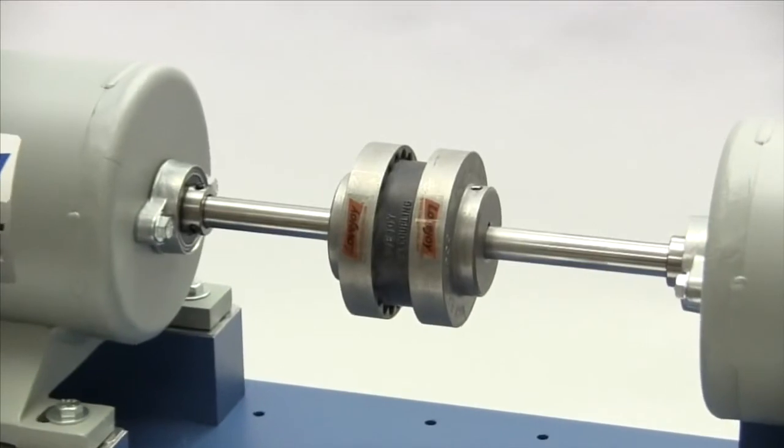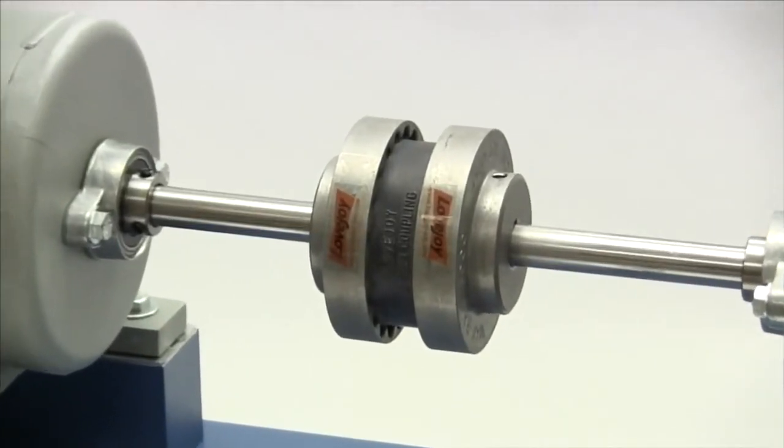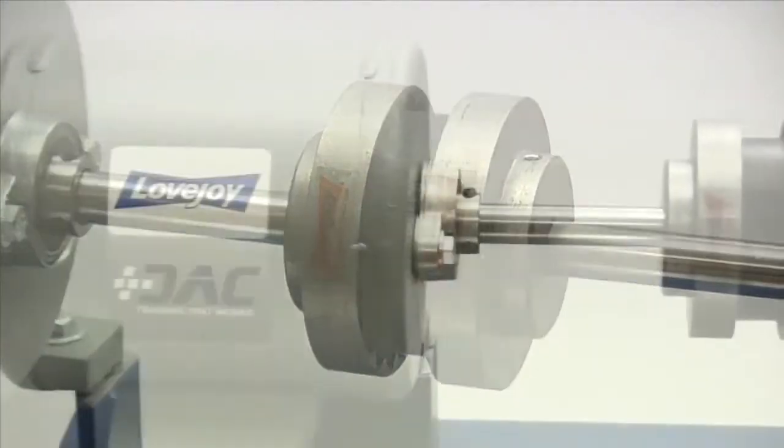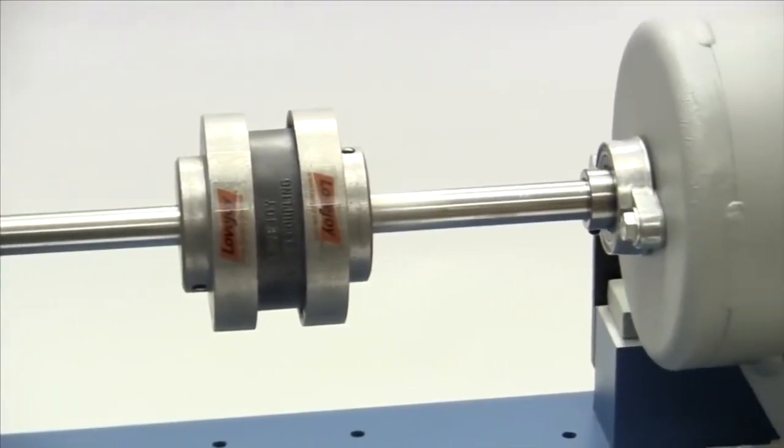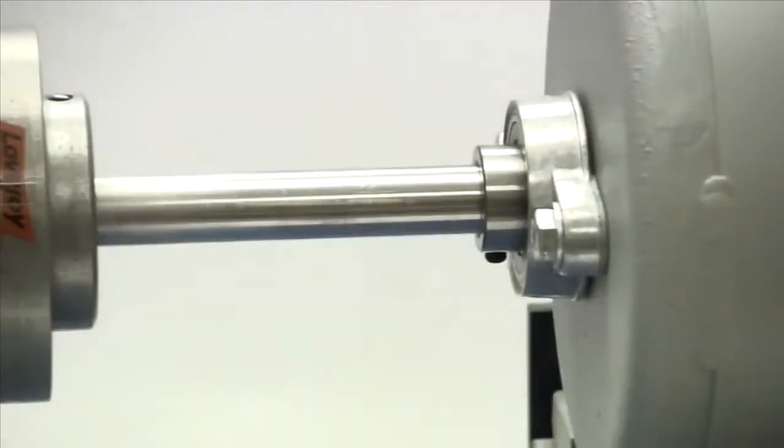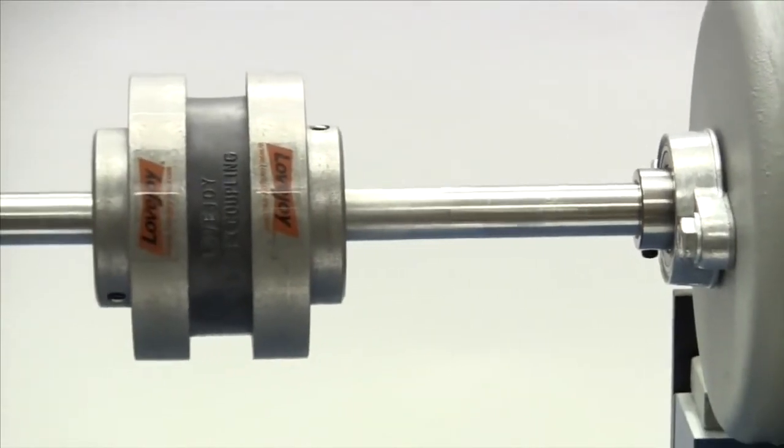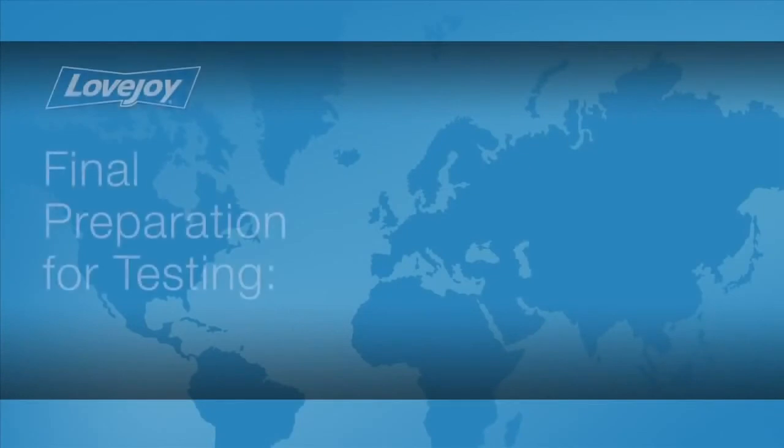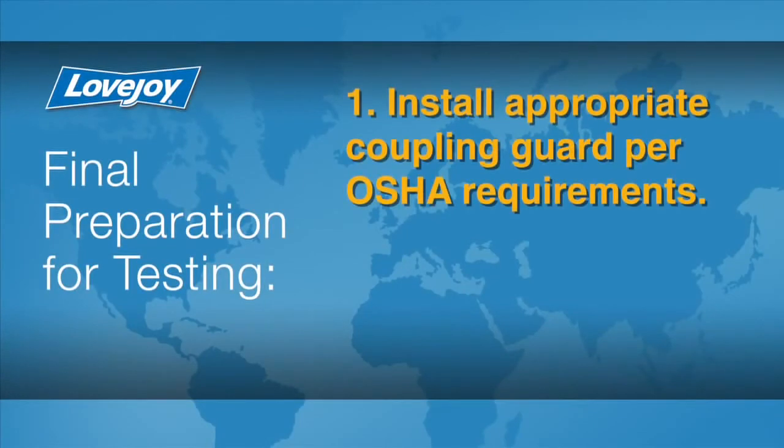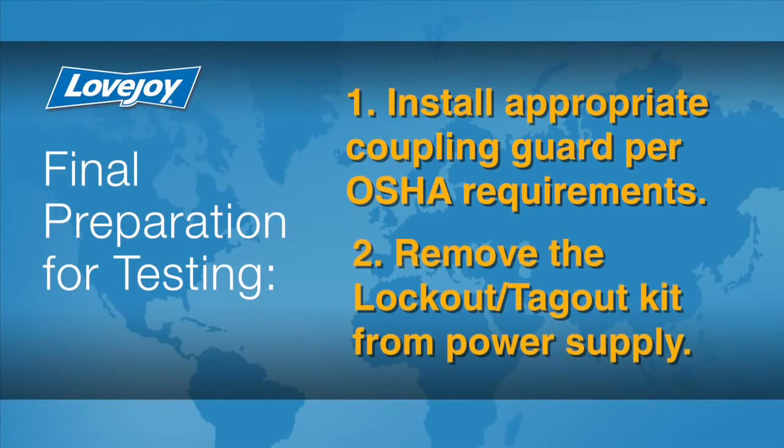When the installation is complete and the equipment is aligned to meet specifications, remove the tooling and material away from the shafting and coupling. Double check the set screw tightness with a calibrated torque wrench, then prepare for testing. Install the appropriate coupling guard per OSHA requirements and remove the lockout tagout kit from the power supply.